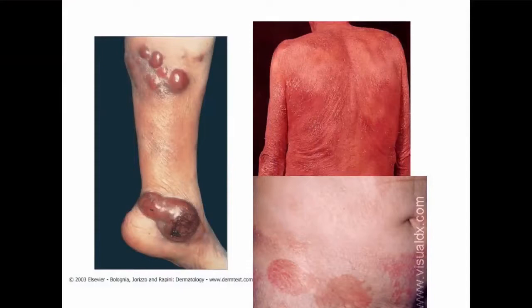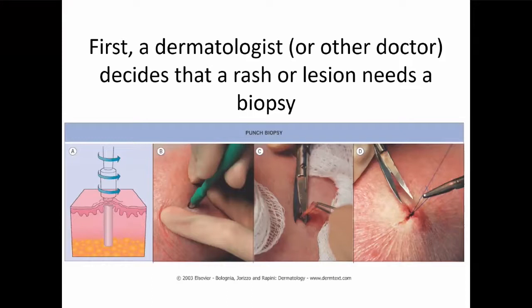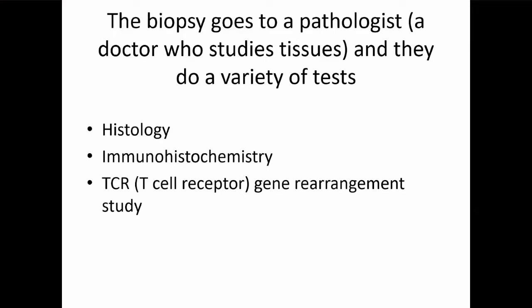These are what we talk about with cutaneous lymphomas, and there are many different ways it can look on the skin — patches and plaques, erythroderma where your skin is all red and scaly, and tumors. When you come to your doctor with a rash or a lesion, at some point someone has to say we need to do a biopsy to figure out what it is. Many of you have probably been through a skin punch biopsy, which I describe as taking the world's smallest cookie cutter and taking a little tiny core sample of the skin that goes off to the lab. Sometimes you get stitched up. That biopsy goes into a jar and goes off to a pathologist — a physician who has studied the abnormal responses of cells — whose job is to look at tissue under the microscope and say what's wrong with it.